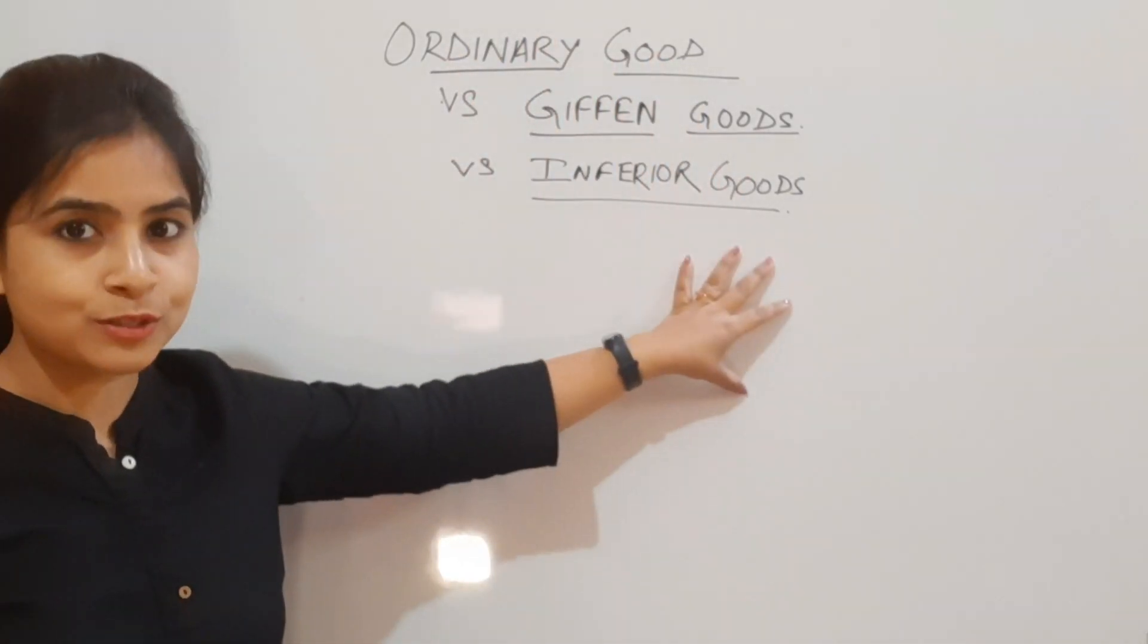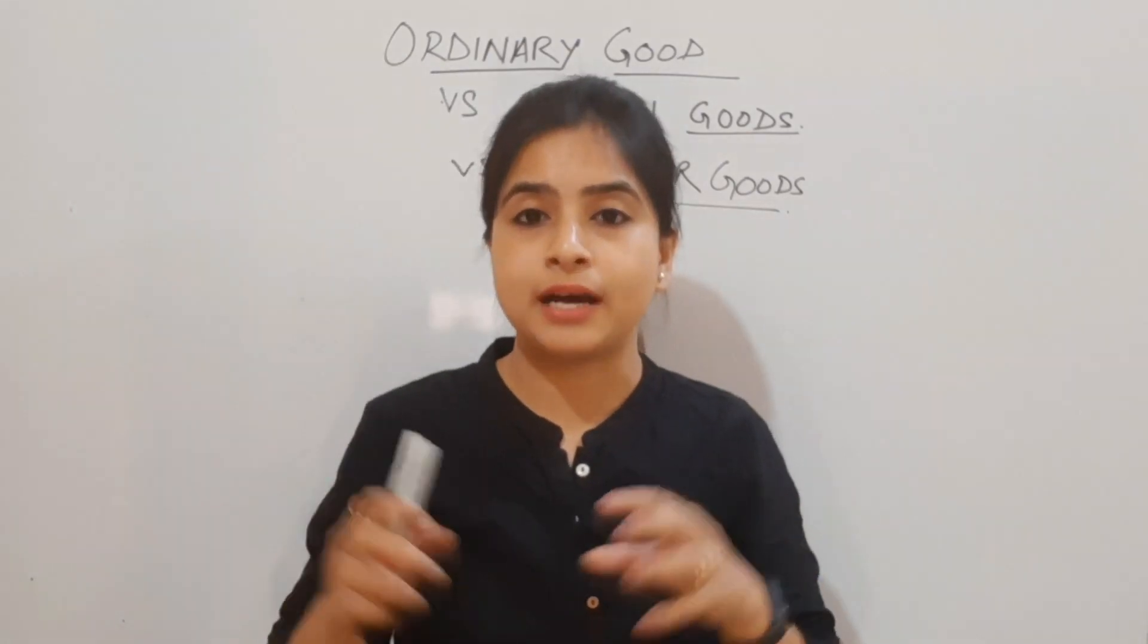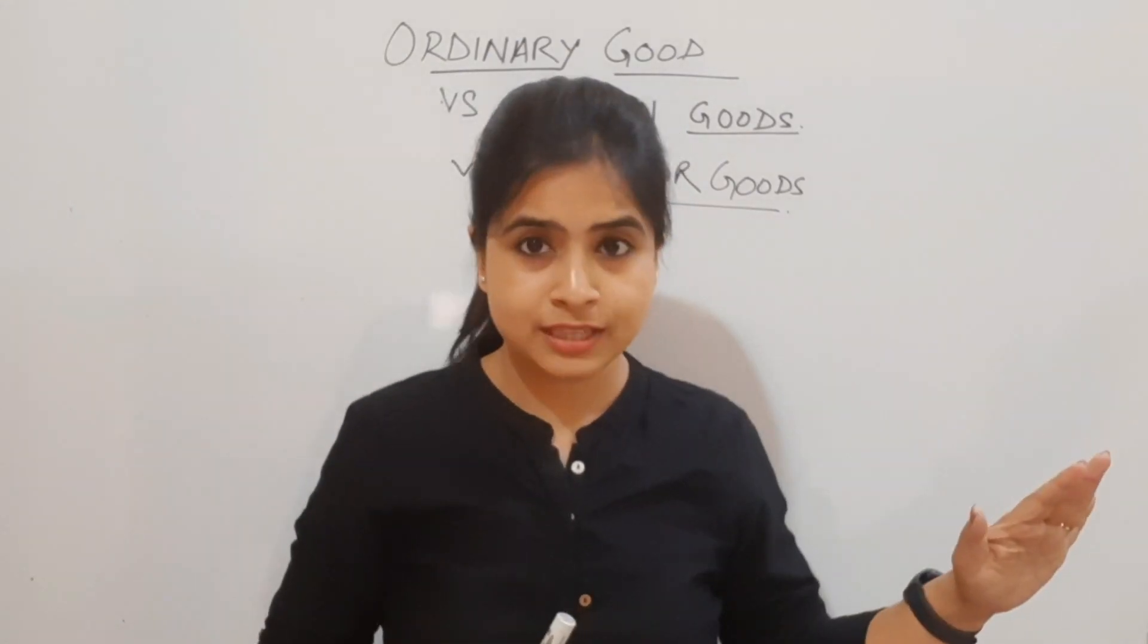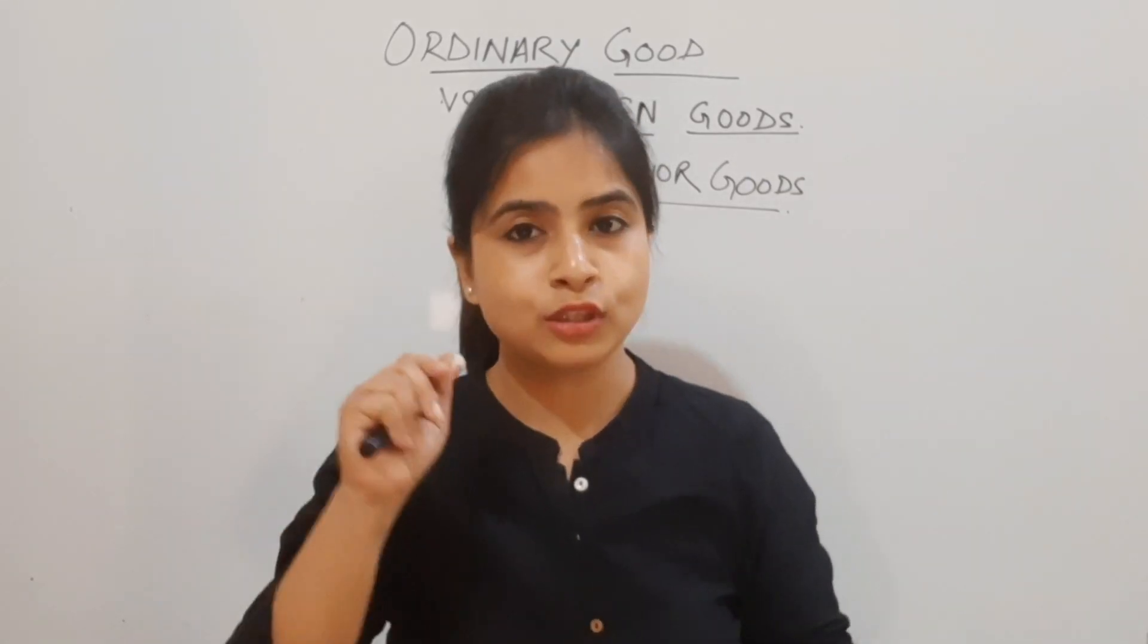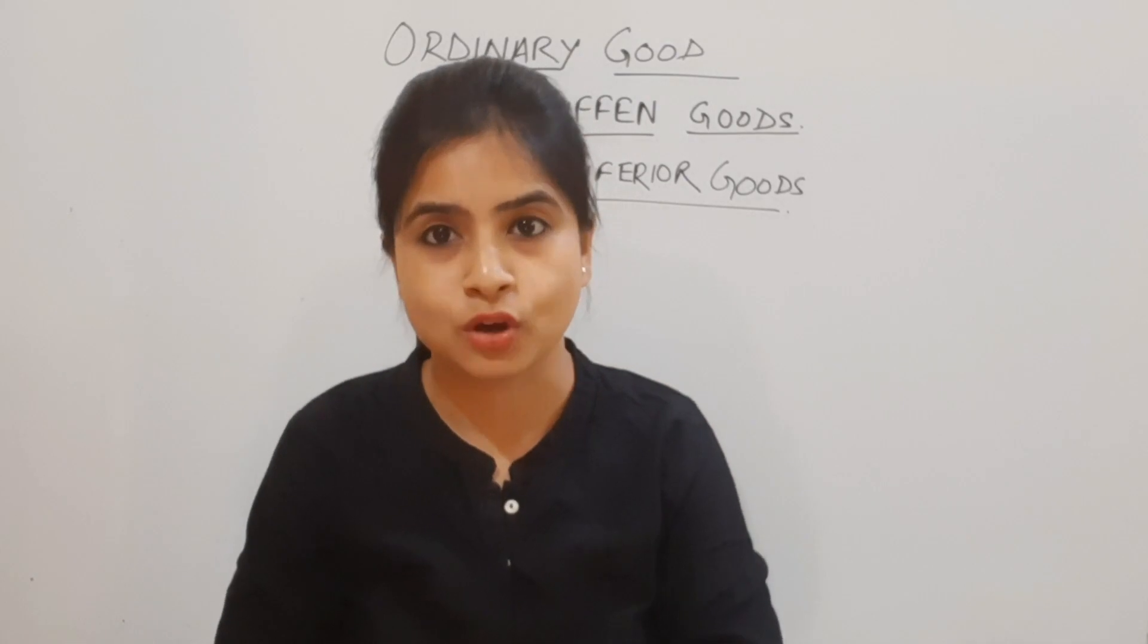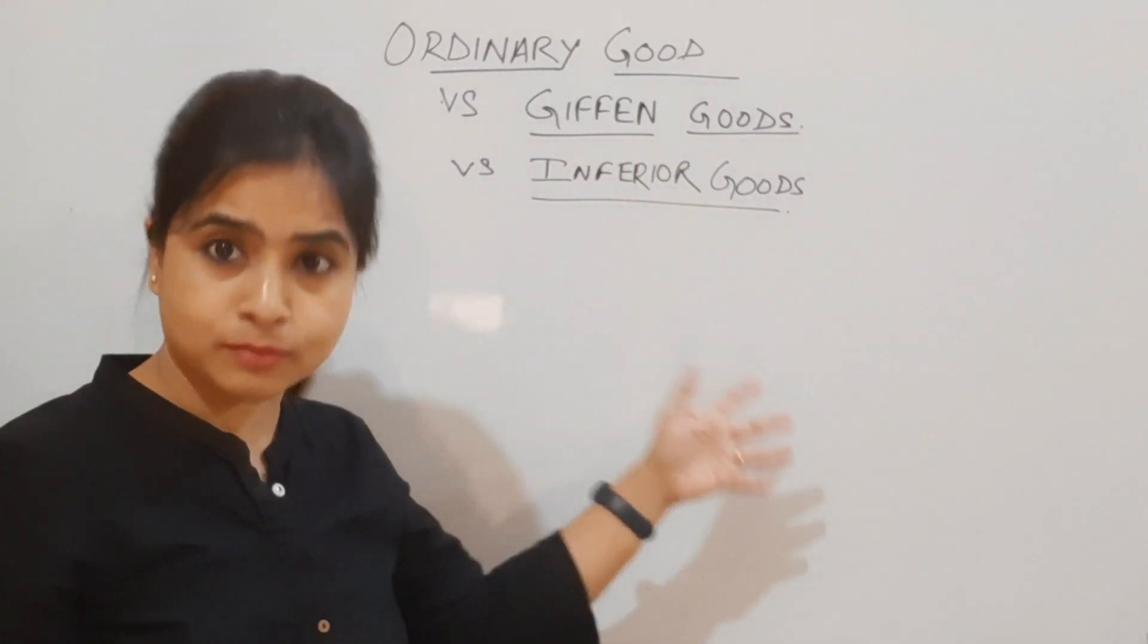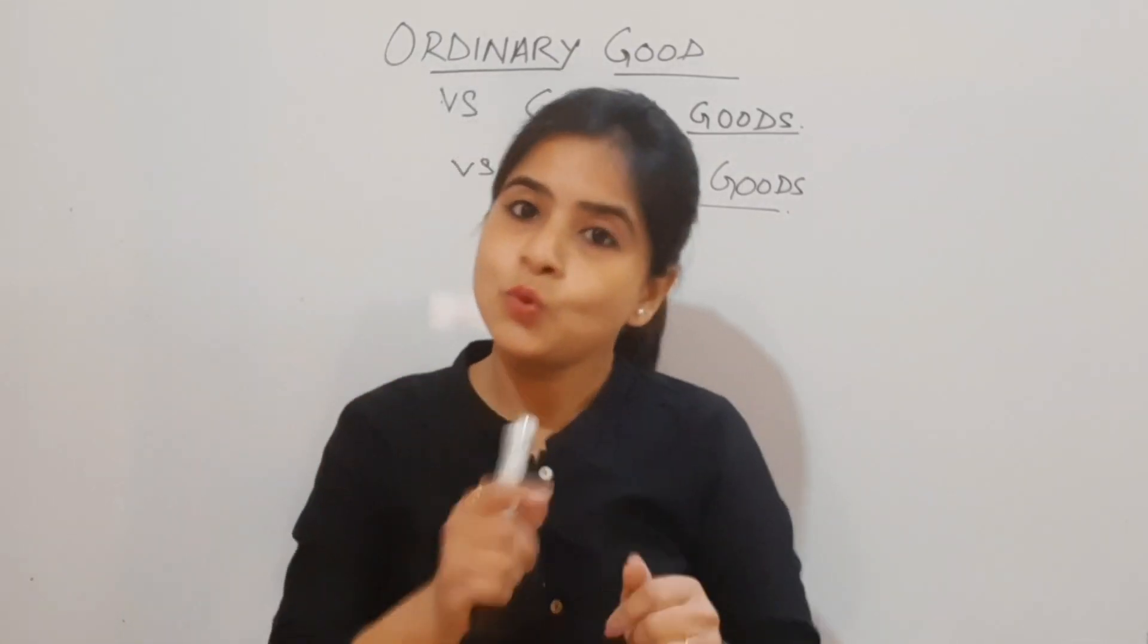You can see there are three things written on the board: ordinary good versus Giffen good versus inferior goods. We'll talk about two goods today, and in the next upcoming part we'll cover the remaining topics.